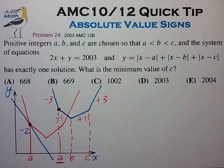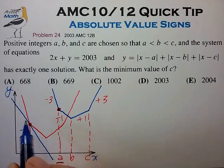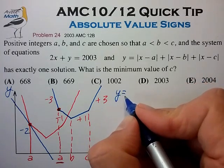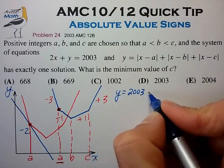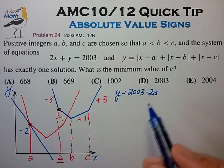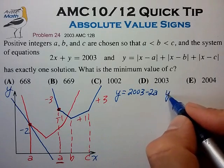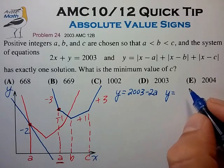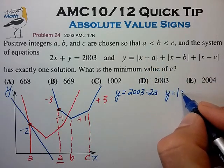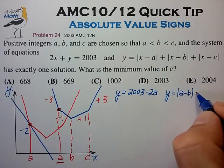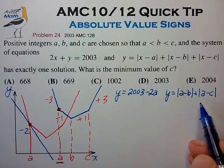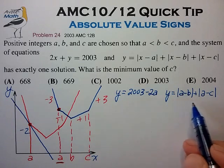Because now we realize that this point can be described with the linear function as y is equal to 2003 minus 2a. It can also be described using the absolute value function as y is equal to, now x is equal to a, so this first term drops out, and we're left with a minus b plus a minus c. Now that looks a lot more easy to handle here, so I think we have a pretty good beat on this problem.